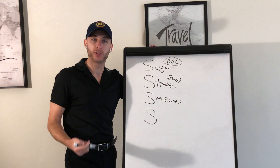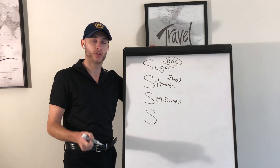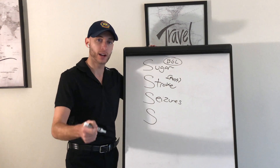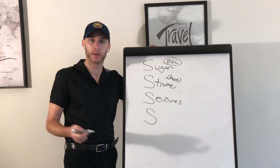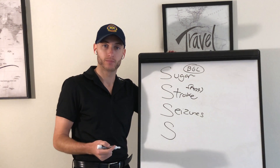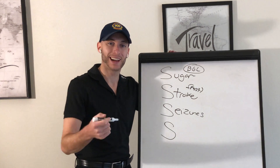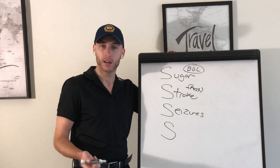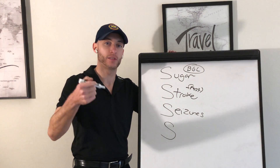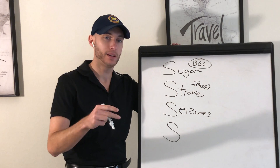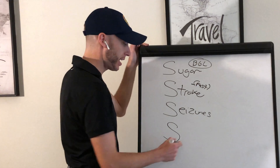Next is Seizure. Are they postictal from a seizure? How do you know? Are they being a little combative? Do they have a seizure history? Check the med list. Common seizure medications include Keppra, Lamictal, Tegretol, Dilantin, and Depakote. The two most common I see in the field are Keppra and Dilantin. And the fourth S is Sepsis.